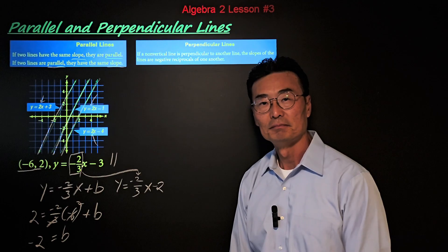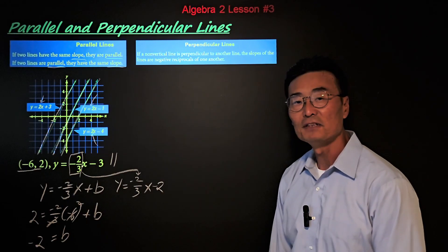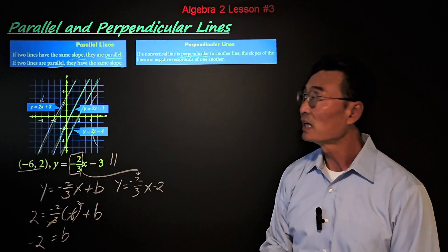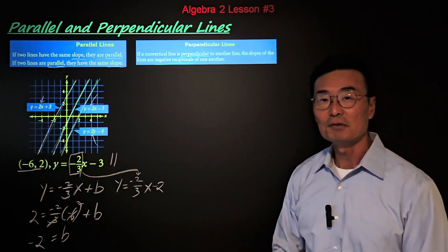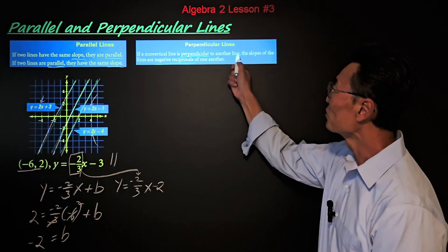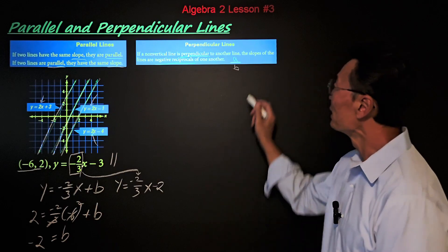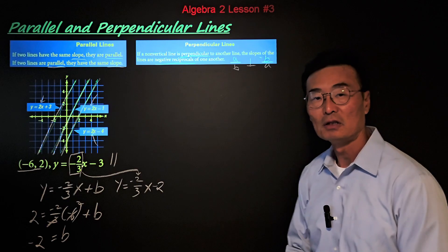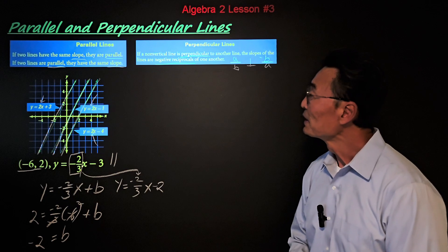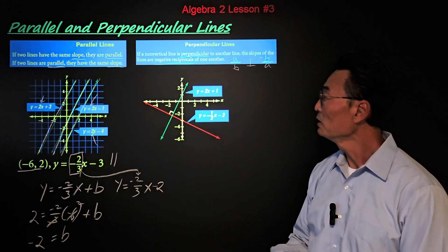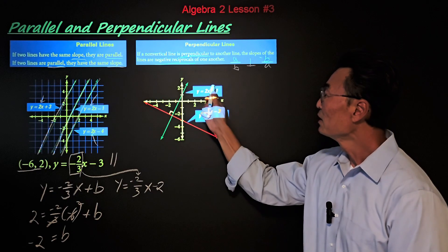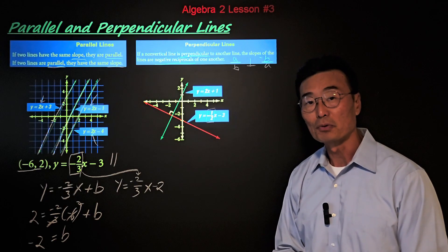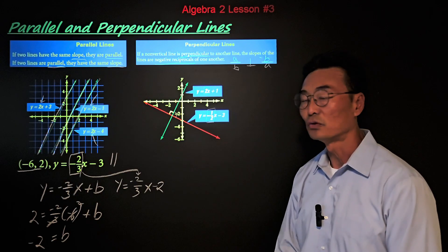What about perpendicular lines? The definition says that if a non-vertical line is perpendicular to another line, the slopes of the lines are negative reciprocals of each other — meaning if the slope of a line is a over b, then the slope of a perpendicular line will be negative b over a. For example, given y equals 2x plus 1 and y equals negative 1 half x minus 3, the slopes are 2 and negative 1 half, which are negative reciprocals, so these two lines are perpendicular to each other.